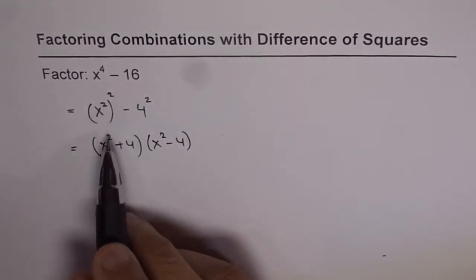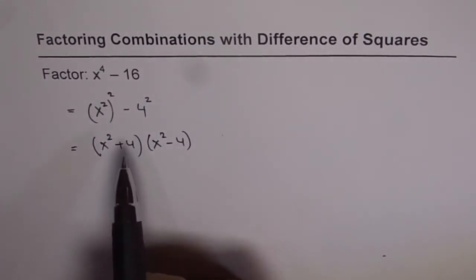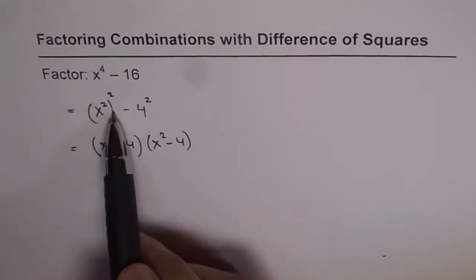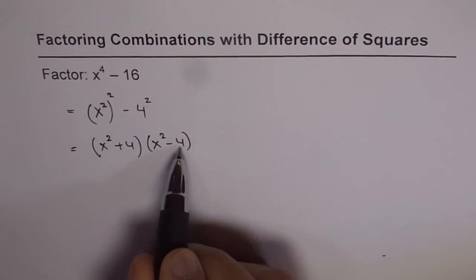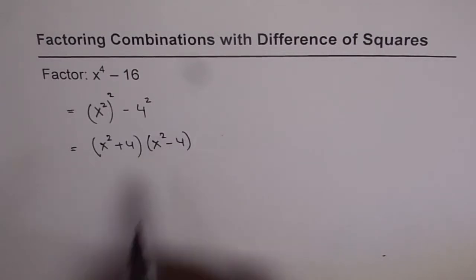So we have done one level of factoring here. This square brought the exponent from 4 to 2. Now, we notice that there is another difference of squares here, since 4 is 2 squared.